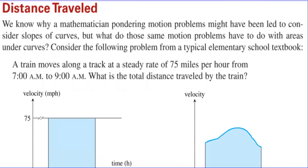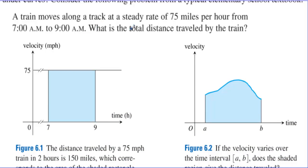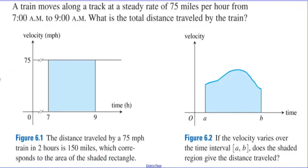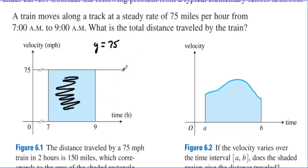A train moves along a track at a steady rate of 75 mph from 7am to 9am. What is the total distance traveled by the train? We can turn the 75 into a function: y equals 75. If we're looking from 7am to 9am as the time, then the area under the curve represents the distance traveled. When we multiply base times height, we have 2 times 75, which is 150. The labels are miles per hour.